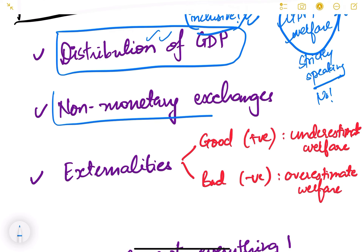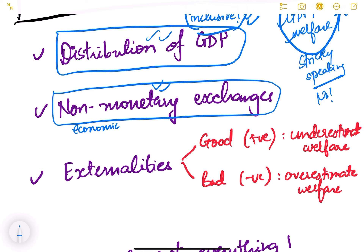Second, there are a lot of non-monetary exchanges. For example, the work that housewives do at home — they don't get paid for it, but it has economic value. If your mother cooks for you and she were not there, you would have to pay someone. There are also barter exchanges still happening in some places. All those things are not included in GDP numbers because we don't have data for them.